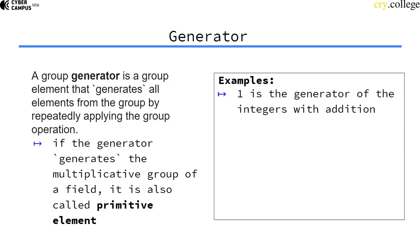Because one plus one is two, one plus one plus one is three, one plus one plus one plus one is four. So we get all integers just by using one and the addition operation.